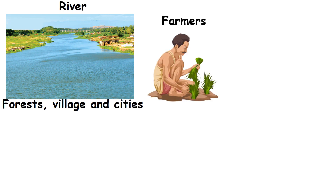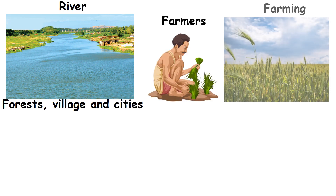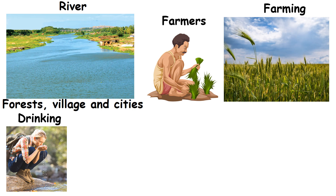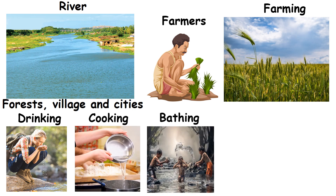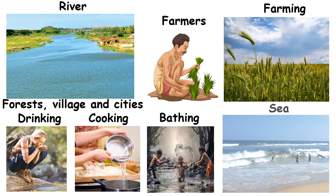Farmers use river water for farming and people use it for drinking, cooking, bathing and for other needs. It finally reaches the sea.